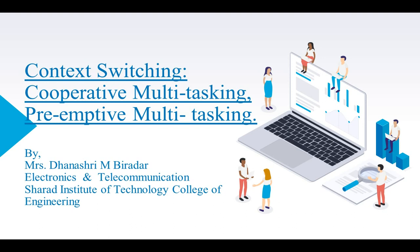Good evening everyone. We are going to start a new point of the chapter, that is context switching. Last lecture we have seen something about the process and the threads — multitasking, process, and threads. Now we are going to see context switching, which is related to the process and the threads. In this point we are going to see cooperative multitasking and preemptive multitasking, and how it is related to the process and the thread.